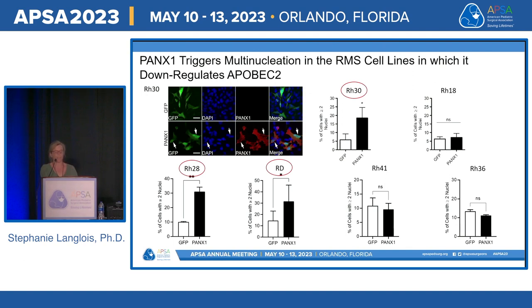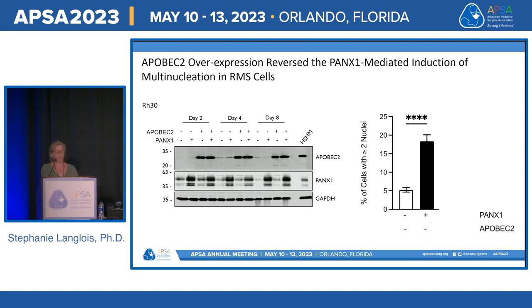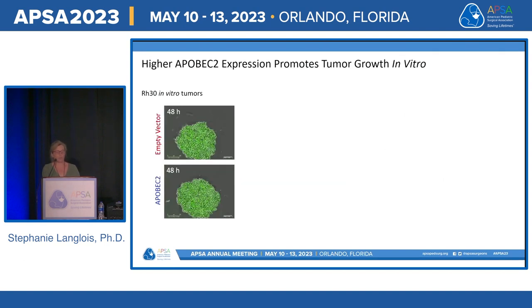Based on the association between cell fusion, multi-nucleation, and APOBEC2 expression, we engineered RH30 cells to overexpress Pannexin-1 with or without APOBEC2 overexpression and examined multi-nucleation. As expected, Pannexin-1 upregulation triggered multi-nucleation, but this was abolished when APOBEC2 was overexpressed, indicating APOBEC2 downregulation plays a role in this process. Using GFP-expressing RH30 cells and IncuCyte live imaging, we found that cells overexpressing APOBEC2 actually grow faster in vitro after ten days.